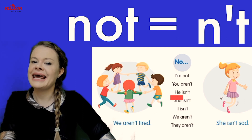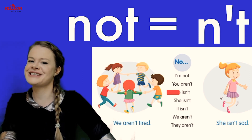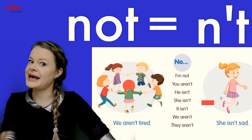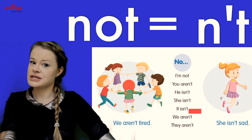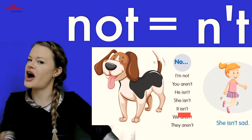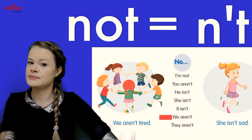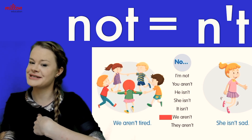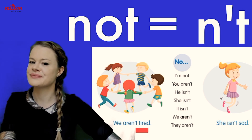Let's look at some more. He isn't — this boy isn't tired either, he's dancing. She isn't — she isn't sad, this girl looks happy. What about 'it isn't'? I have a dog and it isn't tired — it is not tired. 'We' — you and me — aren't, are not tired, like these children here. We aren't tired.